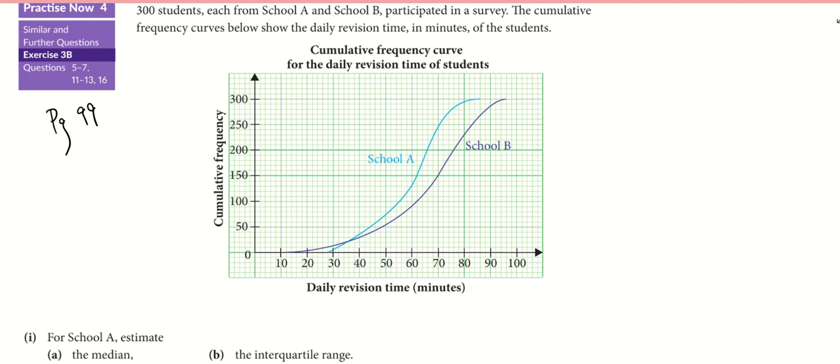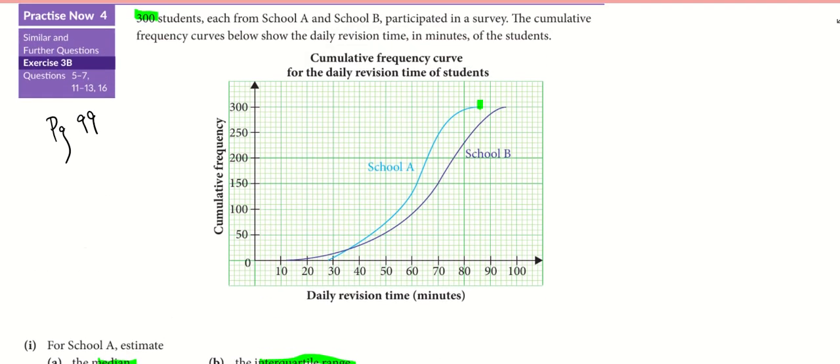Take note, this is very important. Look at the information and look at the tail end. What is the total number? Don't just look at the vertical axis. In this case, we are supposed to find the median and interquartile range for both School A and School B.